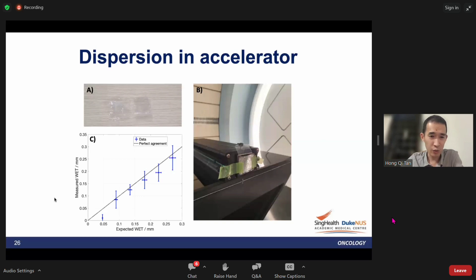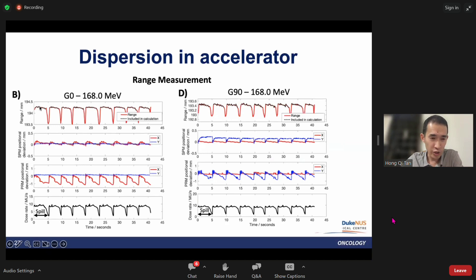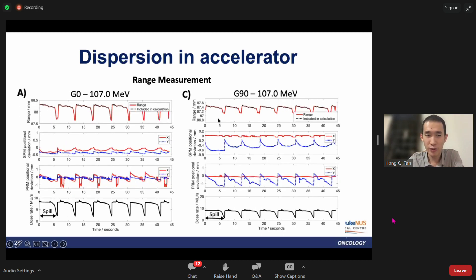These are some of our results. At 168.0 MeV, you can see that the range across the spill slightly dropped and is reproducible across all the different spills. When you go to gantry 3 90, the range shows similar measurements. If you look at the SPM and PRM positional deviations, you can see the drift. In gantry 3 0 degrees, the drift is in the X direction, whereas in gantry 3 90, it's in the Y direction due to precession of the phase space. At 107 degrees, we see a more prominent range drop for both gantries.